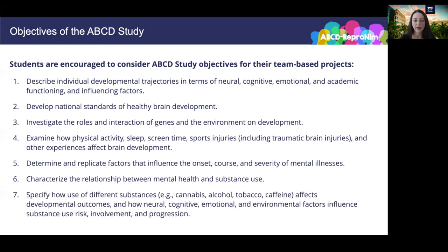The seventh goal of the ABCD study is to specify how use of different substances — for example, cannabis, alcohol, tobacco, caffeine — affect developmental outcomes, and how neural, cognitive, emotional, and environmental factors influence substance use risk, involvement, and progression.